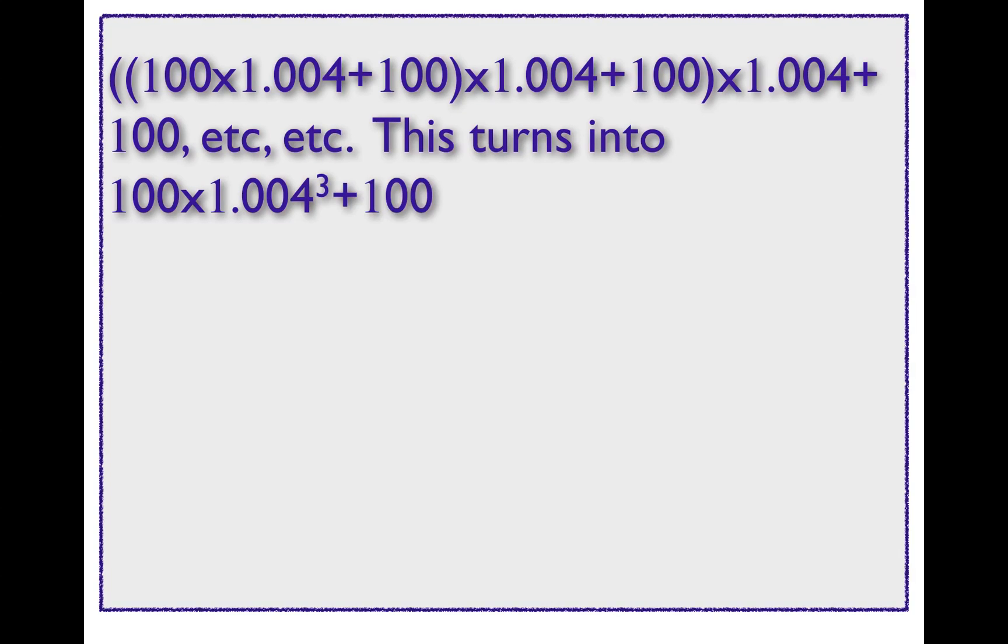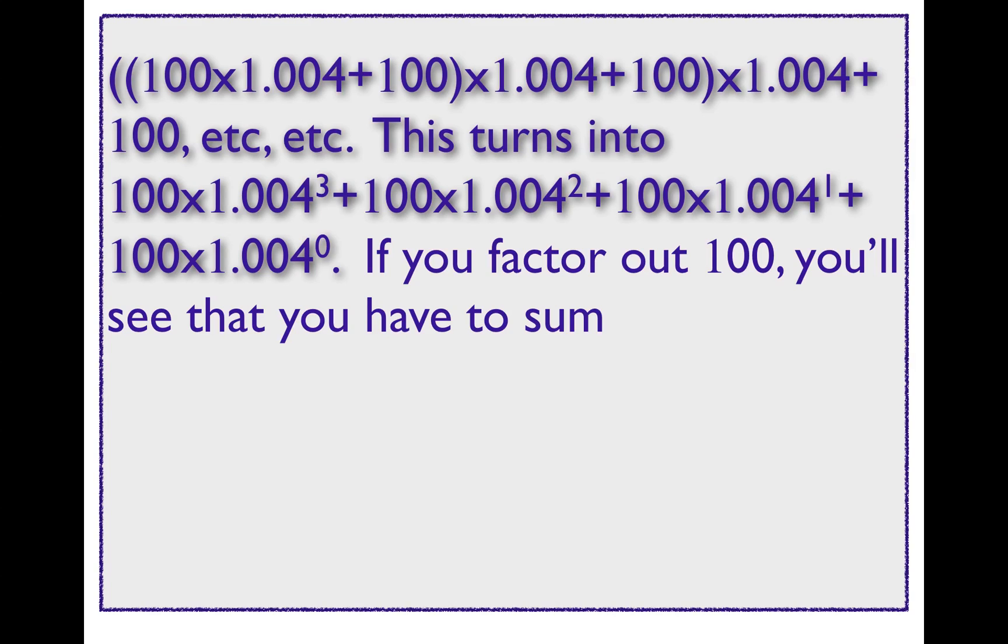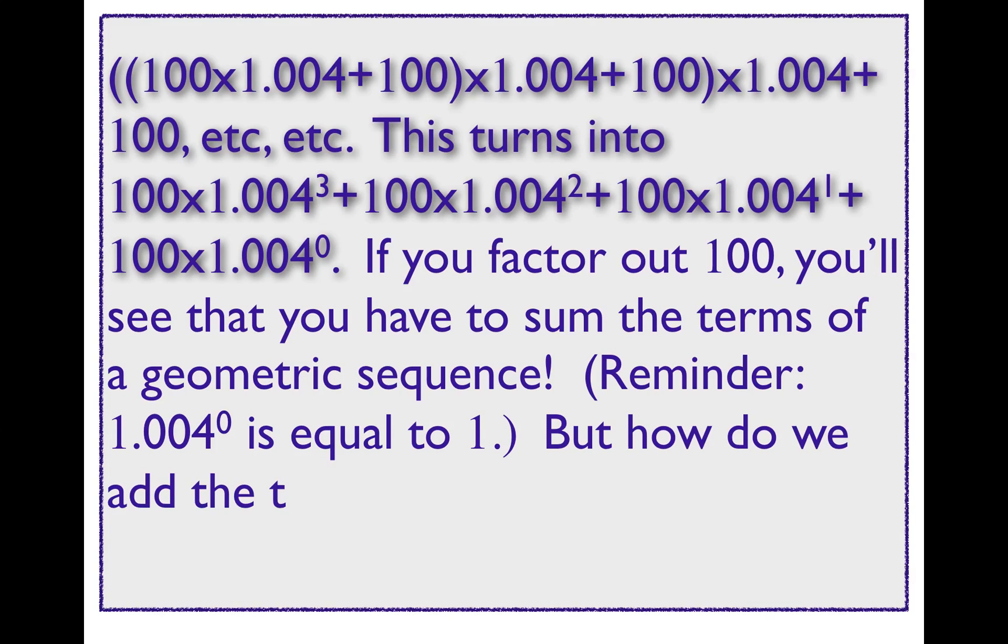Well, that's going to look pretty complicated if you invest $100 a month for a long time. So that turns into something a little easier to work with. 100 times 1.004 to the power 3 plus 100 times 1.004 to the power 2 plus 100 times 1.004 to the power 1 plus 100 times 1.004 to the power 0.